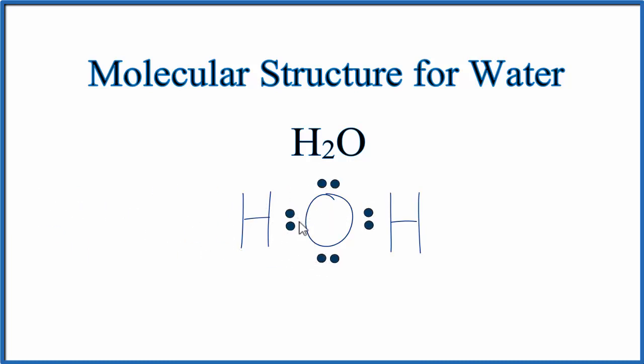These valence electrons here, they form a chemical bond. They're shared between the oxygen and the hydrogen. Same thing here. Pair of valence electrons shared in a chemical bond. Often you'll see this just written as a line. So let's change that.